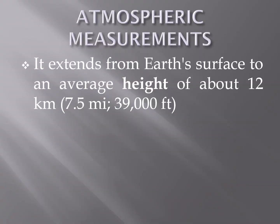The earth's atmosphere extends from the earth's surface to an average height of about 12 kilometers, or 7.5 miles, or 39,000 feet. This means the first layer, the troposphere, is at least 12 kilometers from the earth's surface, and the other layers can go to near 90 kilometers.